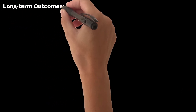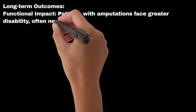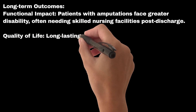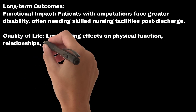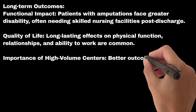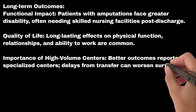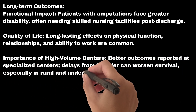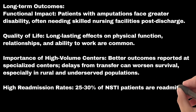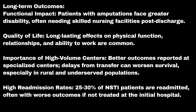Long-term outcomes: patients with amputations face greater disability, often needing skilled nursing facilities post-discharge. Quality of life is affected with long-lasting effects on physical function, relationships, and ability to work. Better outcomes are reported at specialized high-volume centers, and delays from transfer can worsen survival, especially in rural and underserved populations. High readmission rates — 25–30% of NSTI patients are readmitted — often with worse outcomes if not treated at the initial hospital.